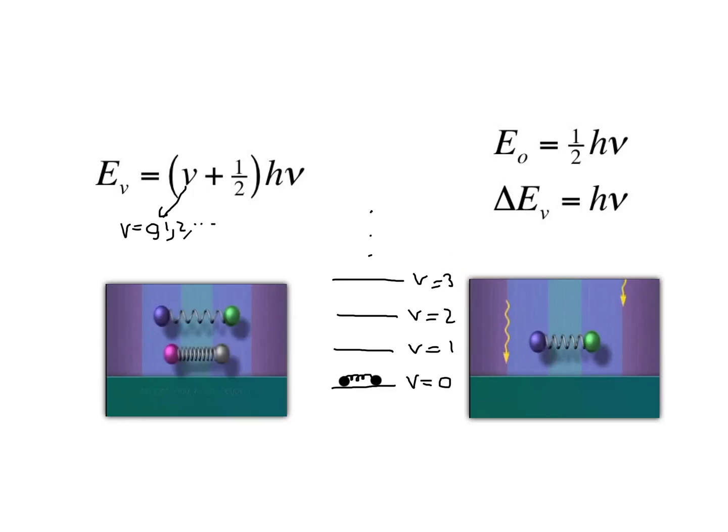The ground state, the lowest vibrational level, is V equals 0. That state will have an energy of one-half h nu.